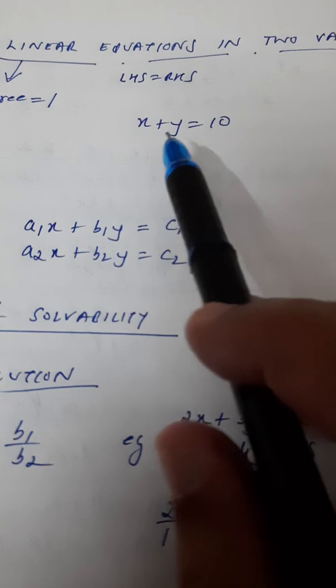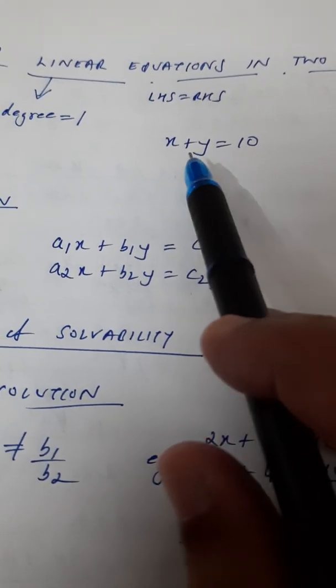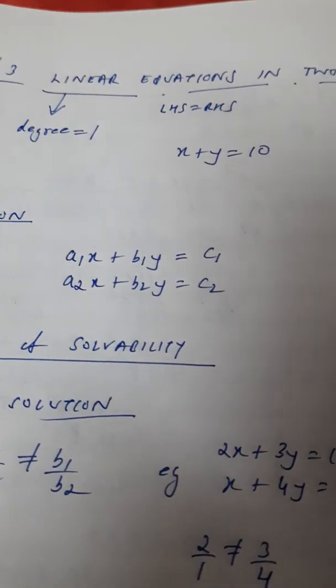So, two variables mean it can be X, Y, A, B, C, D, whatever, two alphabets should be there. So, we are doing linear equations in two variables.